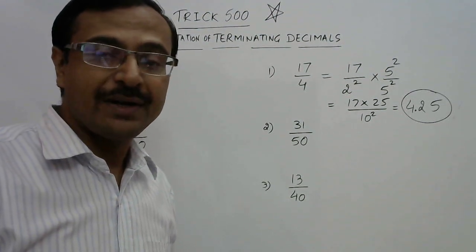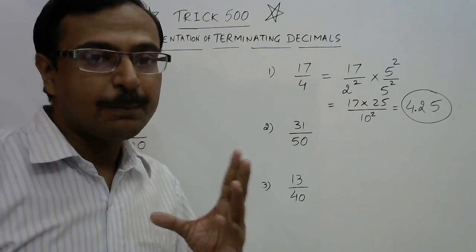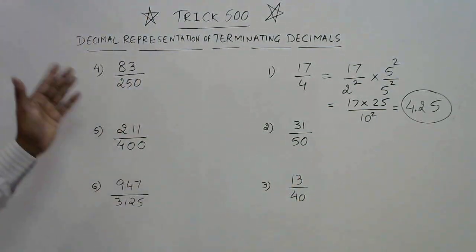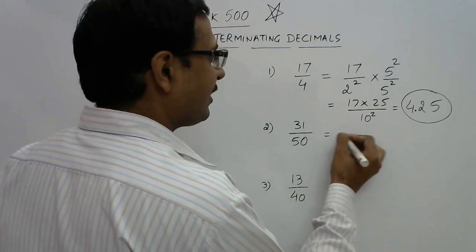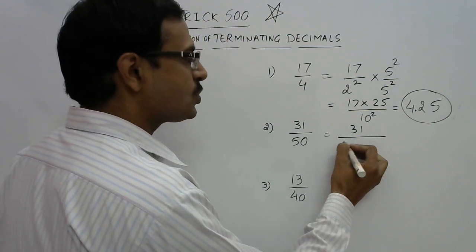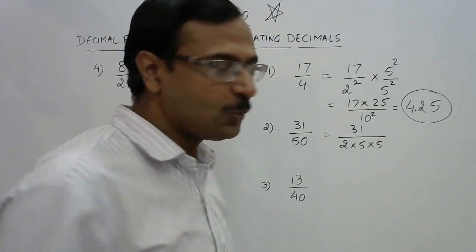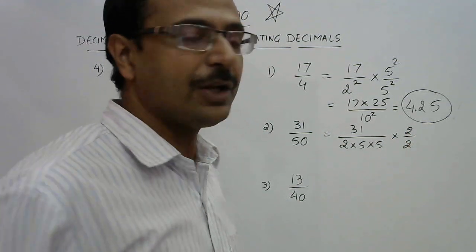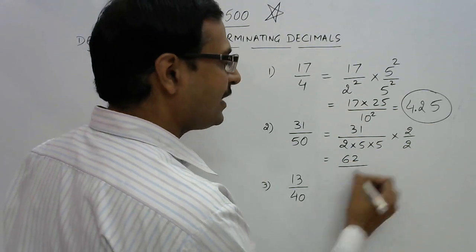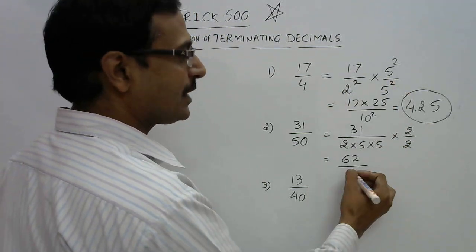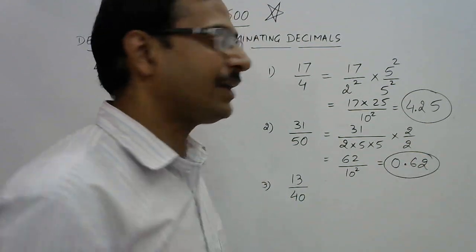But remember, there are some fractions which you can divide mentally also. 17 upon 4 is a very common example, but I use that example to tell you the process. Now we will complicate the matters. See here, 31 upon 50. 31 upon 50 is actually 2 into 5 into 5. We need one more 2, so we will put one 2 in the numerator and one 2 in the denominator. 31 into 2 becomes 62, and in the denominator 2 twos and 2 fives becomes 10 squared, which is 100. So 0.62 is the answer for 31 upon 50.